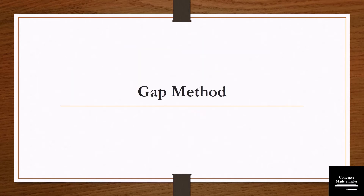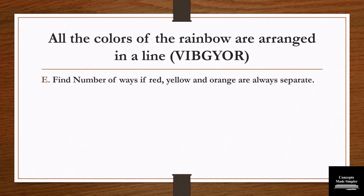I hope you've understood the string method. Now moving forward, we go to the gap method. Let's understand that with an example. The question is: find the number of ways if red, yellow, and orange are always separate. In the gap method, we write all other elements except the elements which are required to be kept separate.